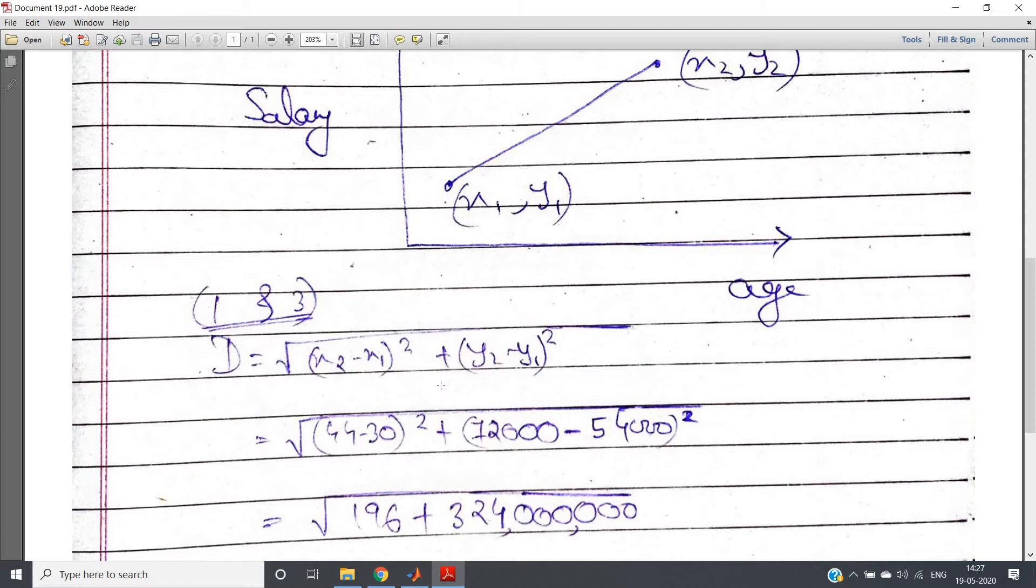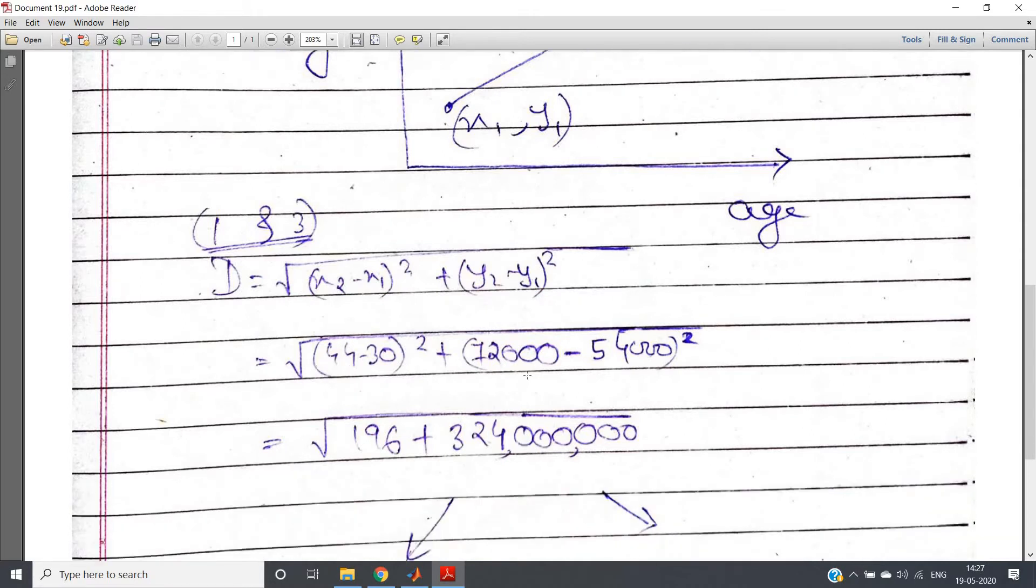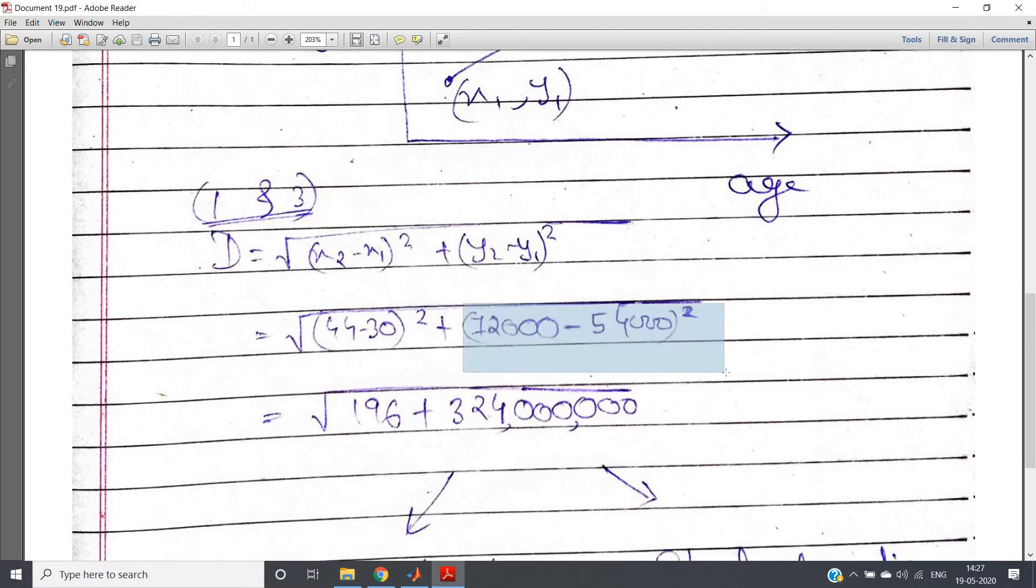Using the formula x2 minus x1 whole square plus y2 minus y1 whole square, if we implement (44 minus 30) whole square plus (72,000 minus 54,000) whole square, see, 72,000 minus 54,000 whole square basically results in this much big value: 324,000,000, whereas 44 minus 30 whole square is nothing but 196. So obviously it is quite clear that the salary difference is dominating compared to age. Although age is completely related with salary, here the effect of age differences becomes very much dilute with respect to salary difference.